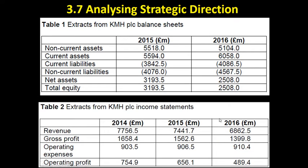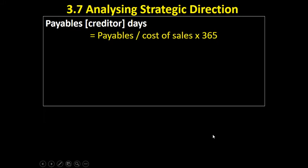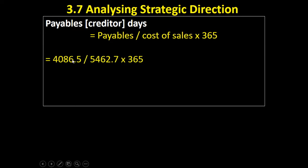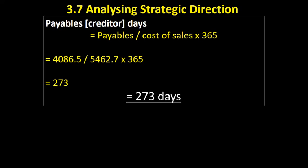Let's put that into the formula. The payables figure is the current liabilities, and the difference between the sales revenue and the gross profit was £5,462.7 — that's our cost of sales. We multiply that by 365, which gives us 273. We're expressing that in days.